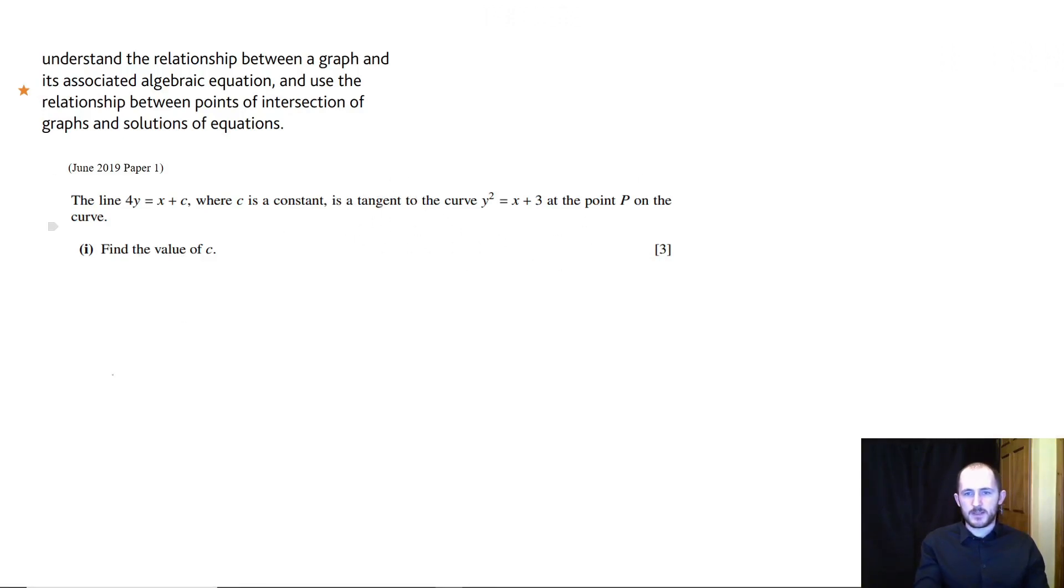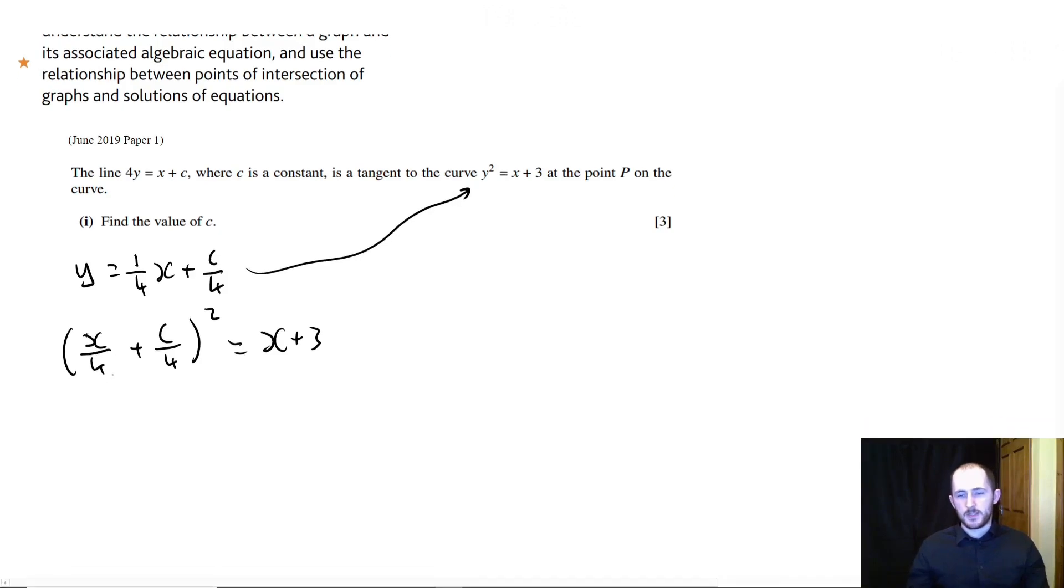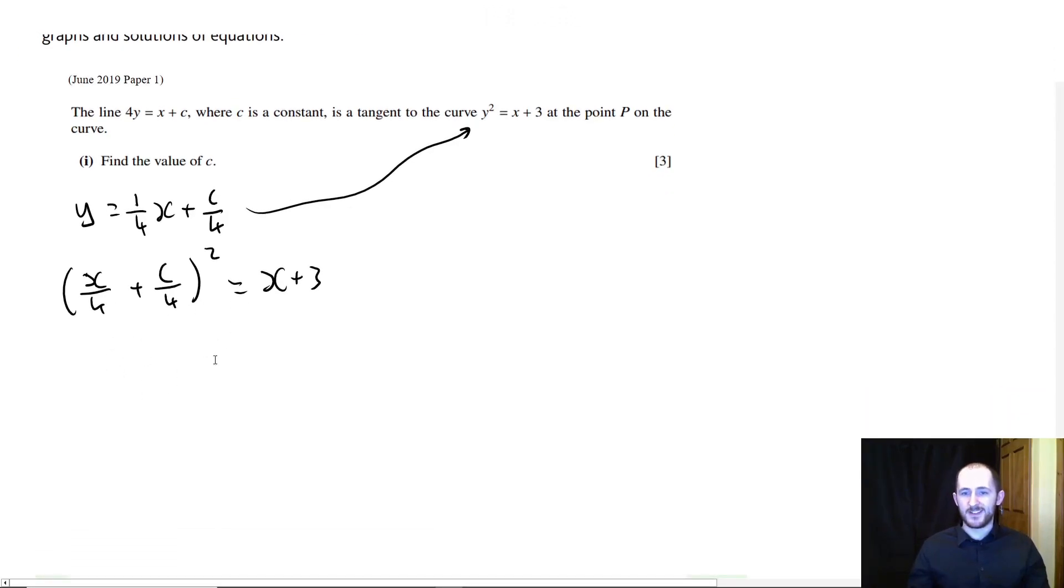So we've actually kind of done this question before. It's a tangent and that means it has one solution. So what we're going to do here is we're going to say that y for this line is equal to x over 4 plus c, and we're going to expand it. And now we can sub that into here. So we have x over 4 plus c over 4 squared equals x plus 3. So now here comes something that's probably not very fun. We need to expand these brackets.